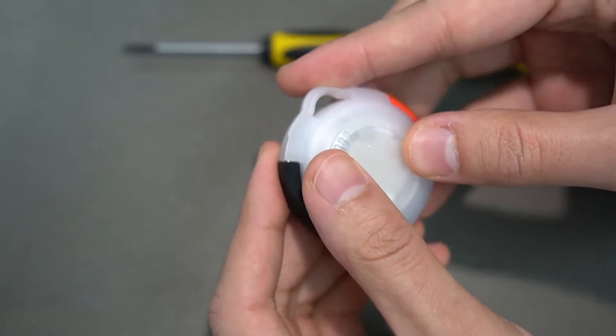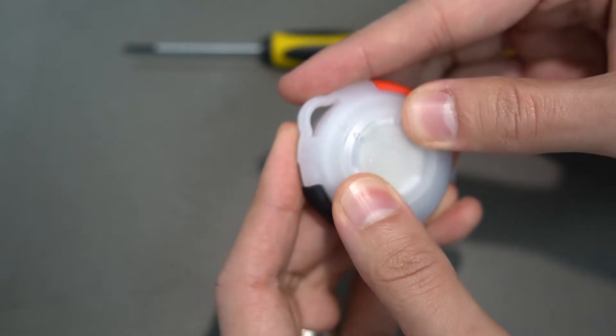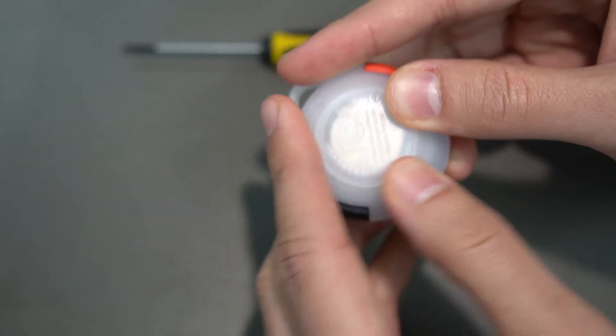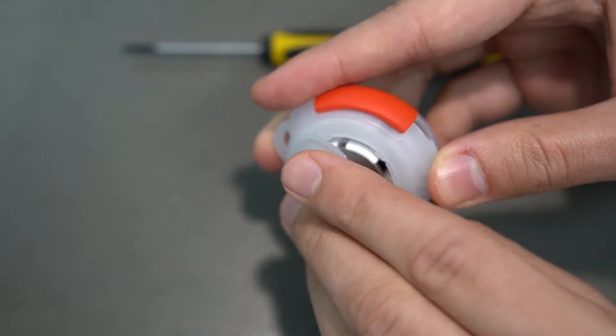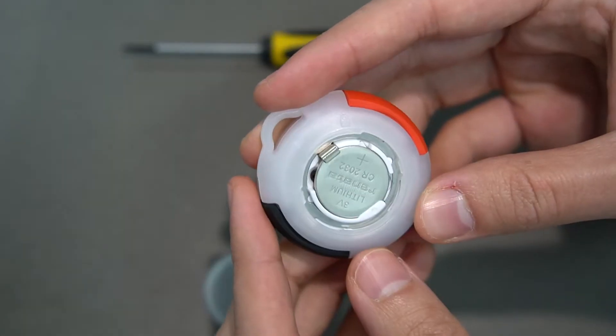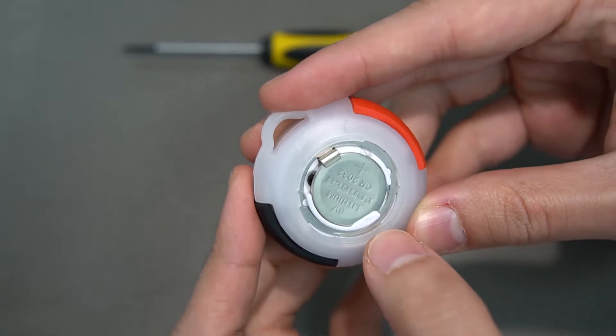So take your pocket meter, flip it over, and you just want to twist the back of this. Then you can just pull that backing off there. You can see you've got the battery in there.